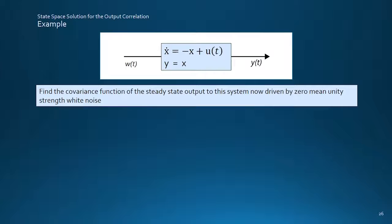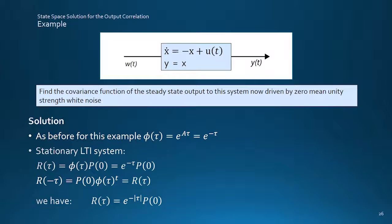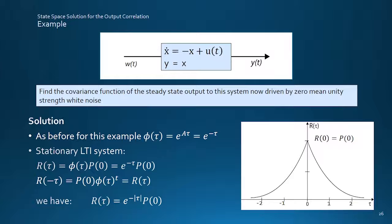Returning to the previous example, but now looking for the covariance function of the output, which with a zero mean input matches the correlation function. It is obtained from the STM of E to the minus tau, working now with time lag, being substituted into the formula, where we can assume steady state conditions and hence stationary statistics, in which case the covariance is a function of time lag tau only, and where the negative time delay portion is again found from the transpose of the STM to give this result, showing how the correlation between any two sample times decreases exponentially from the zero lag variance.